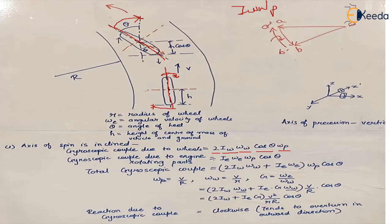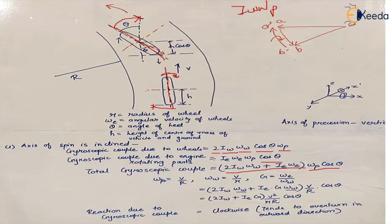The gyroscopic couple due to engine parts is I_e — the moment of inertia of the rotating parts of the engine — times omega_e, the angular velocity of engine rotating parts, times omega_p, the angular velocity of precession. Again, since the axis has changed and we have moved to a new axis, the value becomes multiplied by cos theta. You have to always keep in mind: if the direction of rotation of the wheel and the direction of rotation of the engine rotating parts is the same, we use a plus sign; if the direction is different, we use a negative sign.